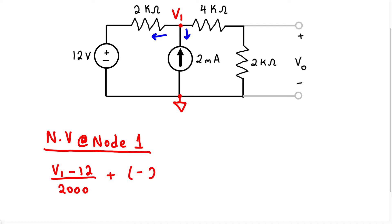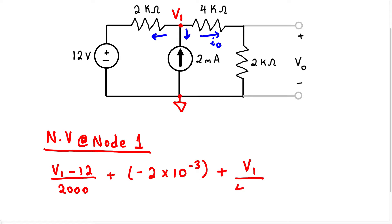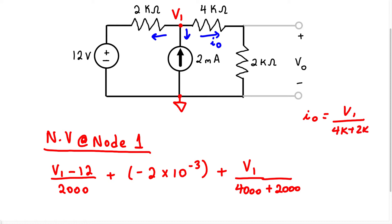So we write it as negative 2 times 10 to the negative 3. Plus, we assume the current is going in this direction, and we notice we have two resistors. These two resistors are going to have the same current I0 flowing through them — through this 4K resistor and this 2K resistor. Because they're in series, we can sum them up and write this as V1 over 4,000 plus 2,000. So I0 equals V1 over 4K plus 2K, which is 6K.